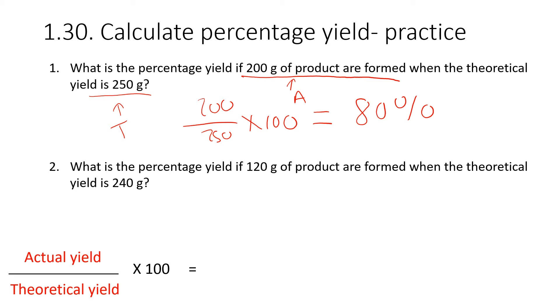For number two, what is the percentage yield if 120 grams of product are formed when the theoretical yield is 240? So we're going to do our actual, which is 120, divided by our theoretical, which is 240, times 100, which is 50%.